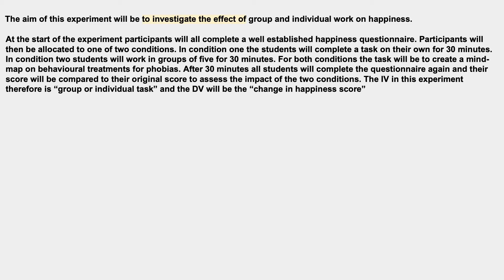The second bullet point is slightly chunkier — here we're talking about our variables and our task. I've decided on a task: it's going to be to create a mind map on behavioral treatments for phobias. I've decided what my two groups are going to be: working in groups of five for 30 minutes, or working by yourself for 30 minutes. By explaining what the task is, I've also determined what my IV and DV are — that is group or individual task for the IV, and a change in happiness score for the DV. Note that I've started the task by having participants take a happiness questionnaire first and then again afterward, because I need something to compare it to.